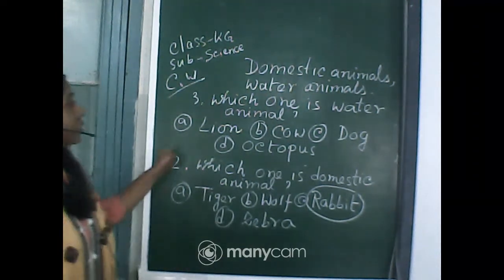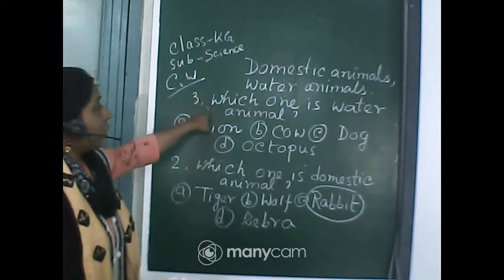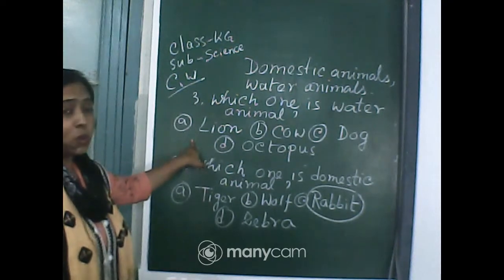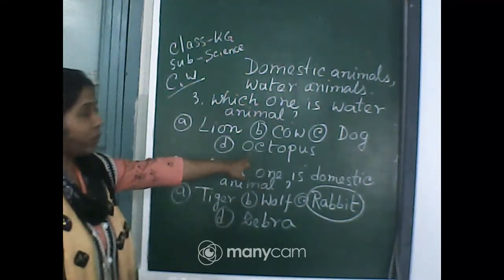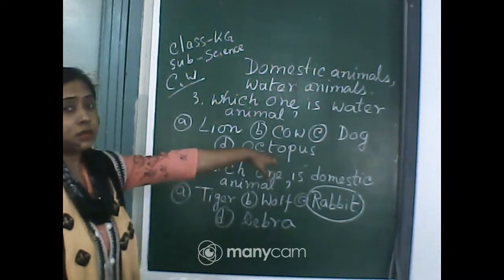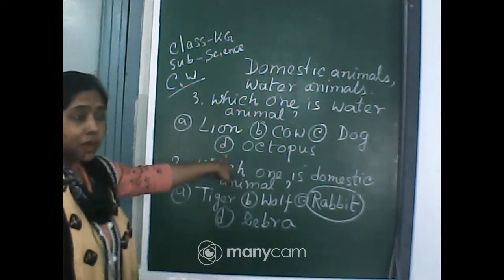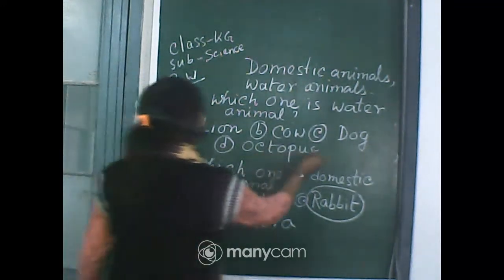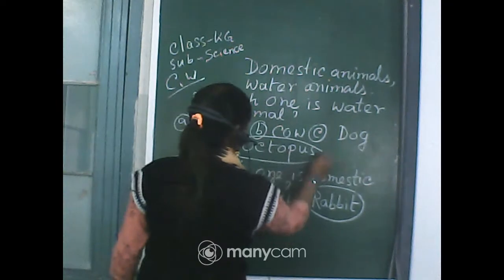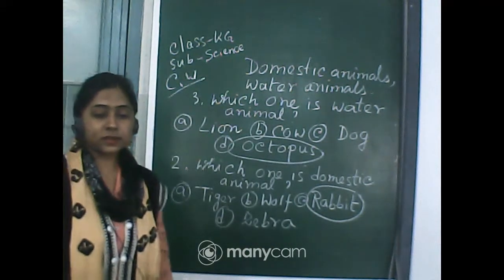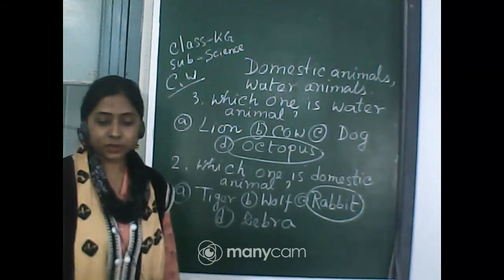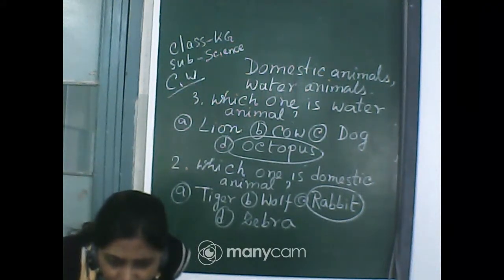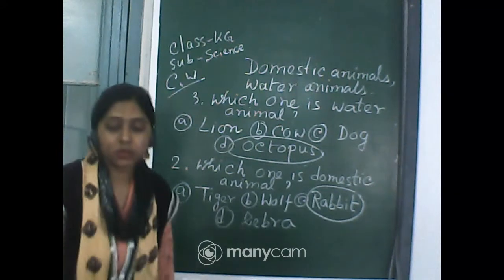The question was: which one is a water animal? Lion — no. Cow — no. Dog — no. D: Octopus — that is the correct option. I am circling it. Octopus is the water animal. Simran, you have written 'O' — it is 'Octopus', starting with O.